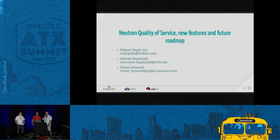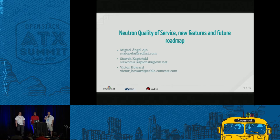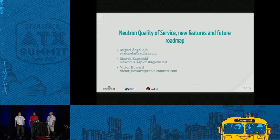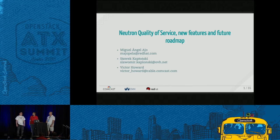Thank you all for coming to the Neutron Quality of Service Features and Future Roadmap talk. I'm Victor Howard, a Principal Engineer at Comcast. I'm Slavek, working at OVH as a DevOps operator and developer of OpenStack. And I'm Miguel Angel Ajo, I work at Red Hat in the Neutron team.